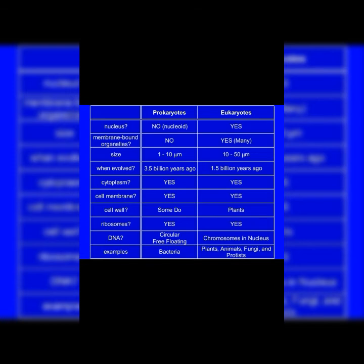Now let's look at the differences between prokaryotic and eukaryotic cells. A nucleus is not present in prokaryotes but is present in eukaryotes. Membrane-bound organelles are not present in prokaryotes but are present in eukaryotes. In terms of size, prokaryotes range from 1 to 10 micrometres and eukaryotes from 10 to 50. Prokaryotes evolved 3.5 billion years ago and eukaryotes evolved 1.5 billion years ago.